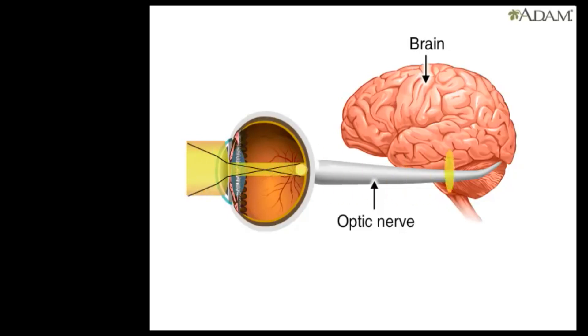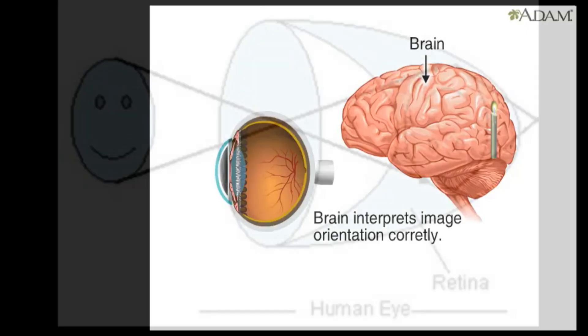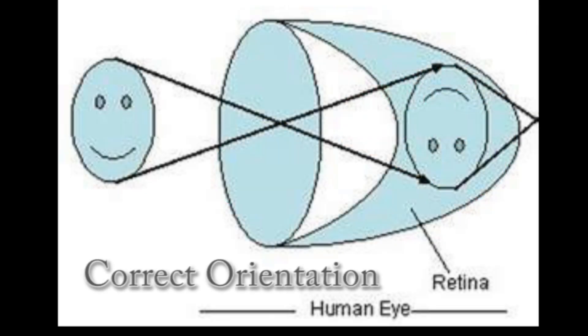Unlike the lens effect, we cannot confirm the brain turns the image over. Our perception is that the image is turned upright. I contend the image is in the right orientation for the consciousness to perceive it correctly — which is upside down.